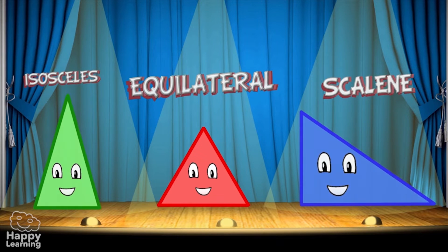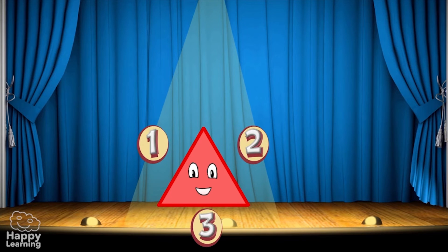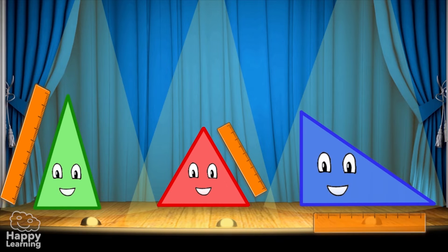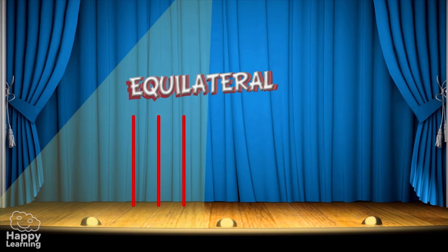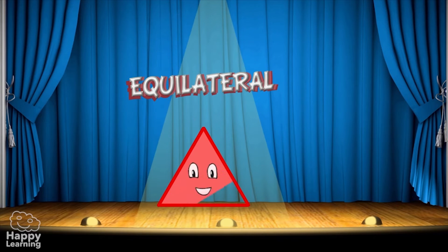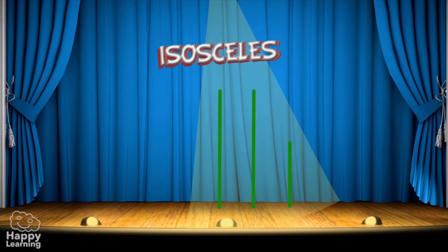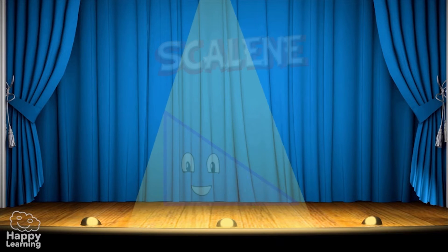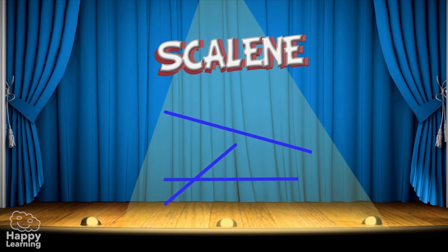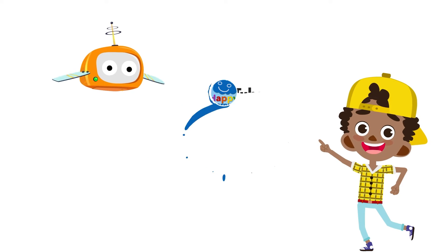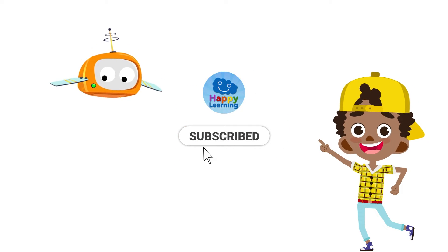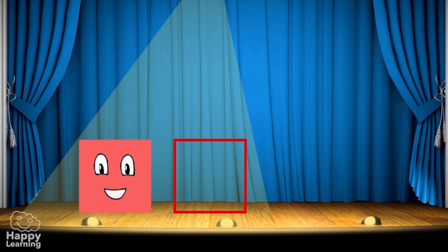Let's look again so we don't forget. All triangles have three sides, and depending on the length of their sides they can be classified like this: an equilateral triangle has all three sides equal in length; an isosceles triangle has two sides the same length and one different; and a scalene triangle has all three sides different in length.